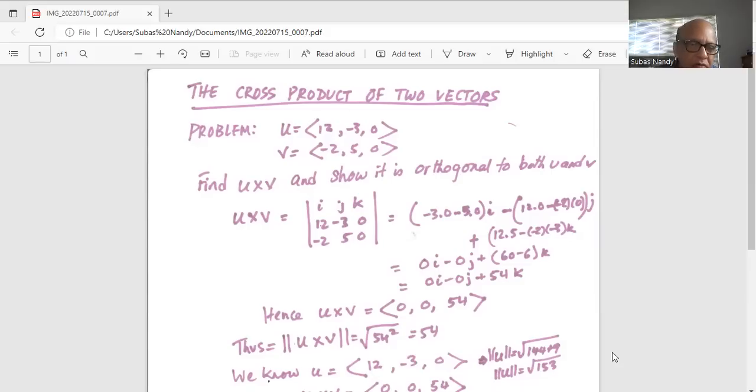For components or coefficients of j, we eliminate the first row in the second column, so we are left with 12 and 0, and minus 2 and 0. So 12 times 0 is 0, plus 0 times minus 2 is 0, of course.